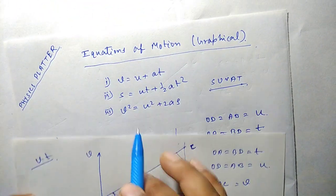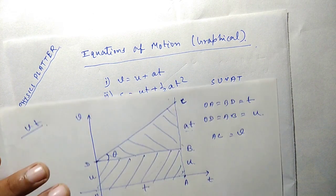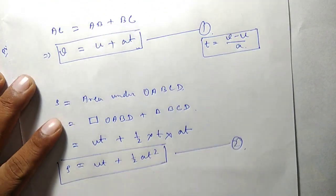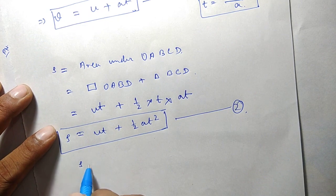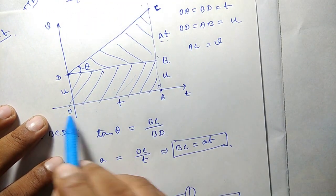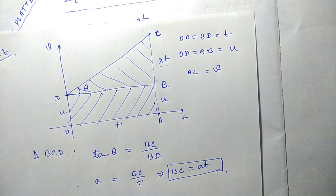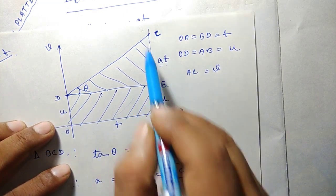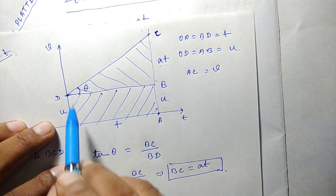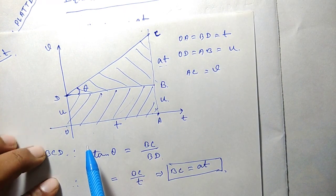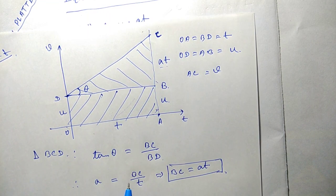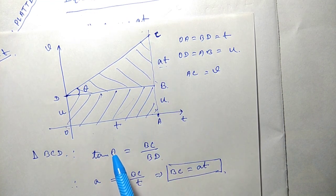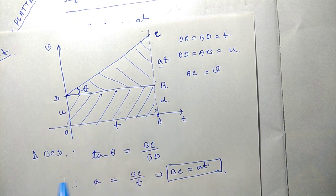Now let's move on to the third equation: v squared equals u squared plus 2as. We start from the same point where we find displacement s. The area of OACD can be found in another way. Previously we split it into a rectangle plus a triangle, but this time we can see that OACD is actually a trapezium, whose two opposite sides OD and AC are parallel to each other, with BD being the distance between them.